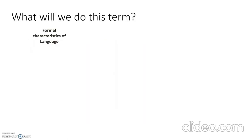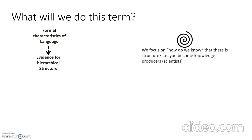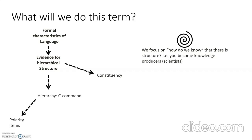So how does this fit into what we're doing this term? We're exploring formal characteristics of language, and specifically looking at evidence for hierarchical structure. We're focusing on how do we know that there is structure. We've done this through looking at constituency and hierarchy and C-command, and we've explored hierarchy and C-command through polarity items, minimality and movement, and now today, binding and reference.